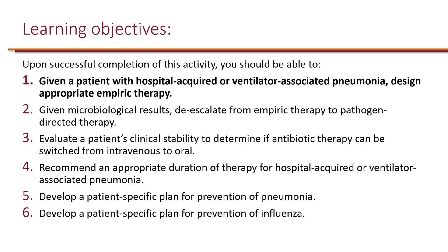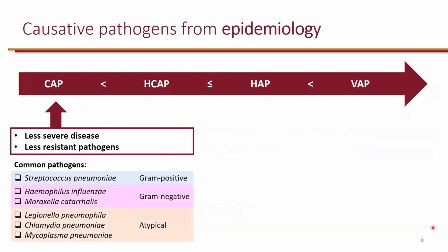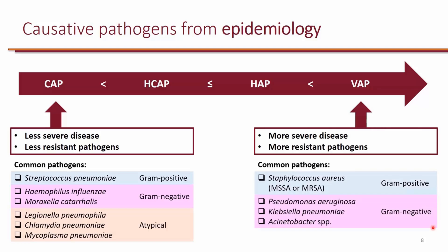You should know that community-acquired pneumonia is a relatively less severe type of pneumonia caused by less resistant pathogens such as Strep Pneumo, H. flu, Moraxella catarrhalis, and atypical organisms. When we look at ventilator-associated pneumonia, it's a more severe disease with mortality as high as 30%, and it's typically caused by more resistant pathogens.